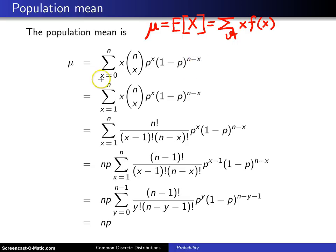Now you'll notice that the very first term with x equals zero corresponds to zero times the probability mass function. And so since that first term is zero, we can change the lower limit of this summation from x equals zero to x equals one.